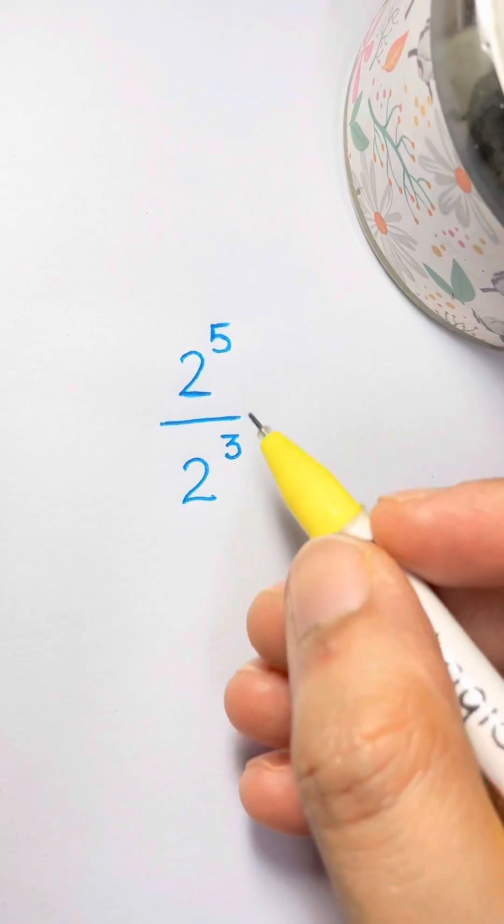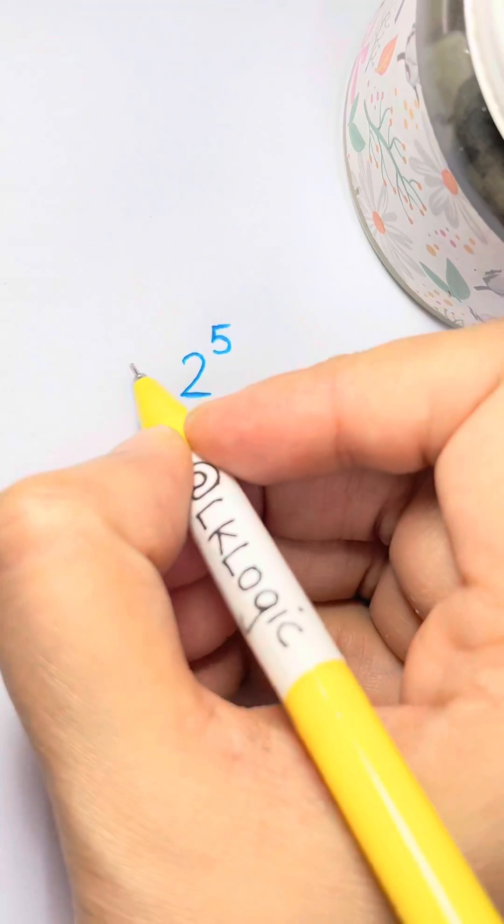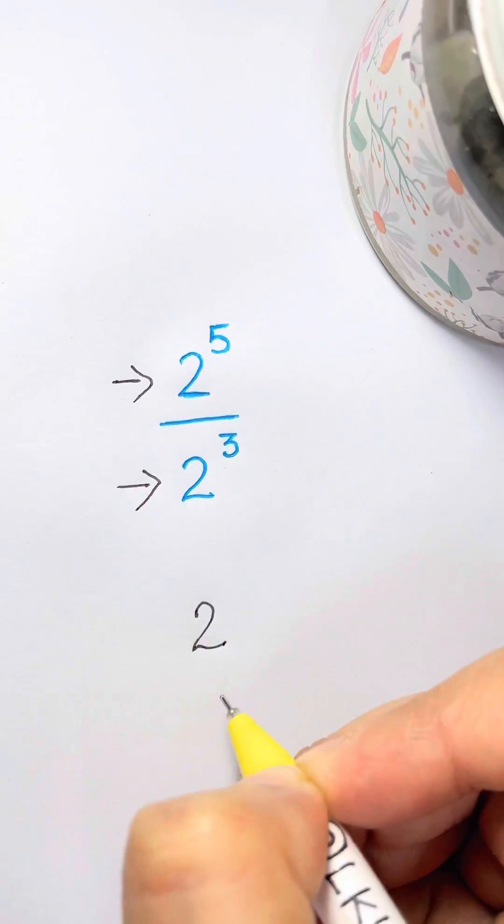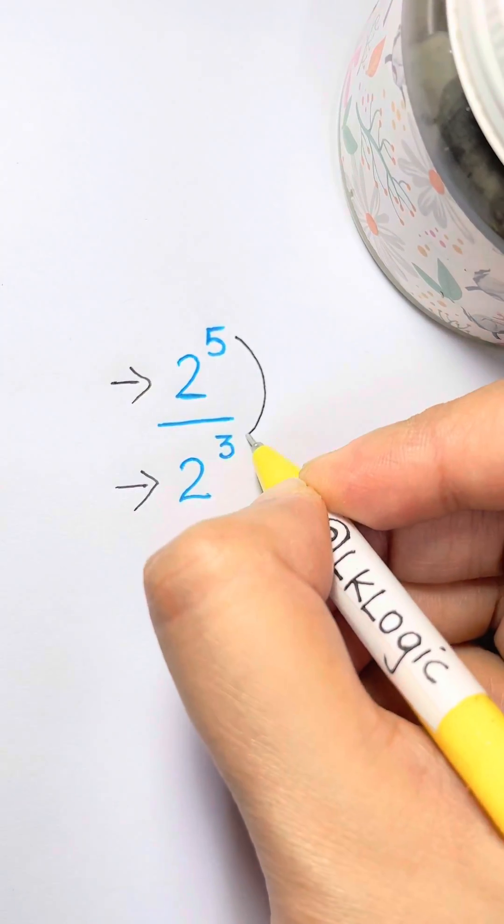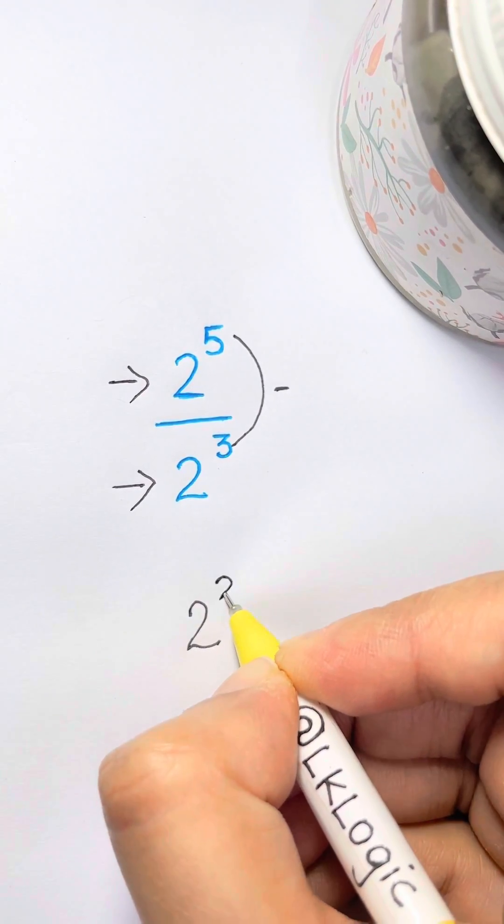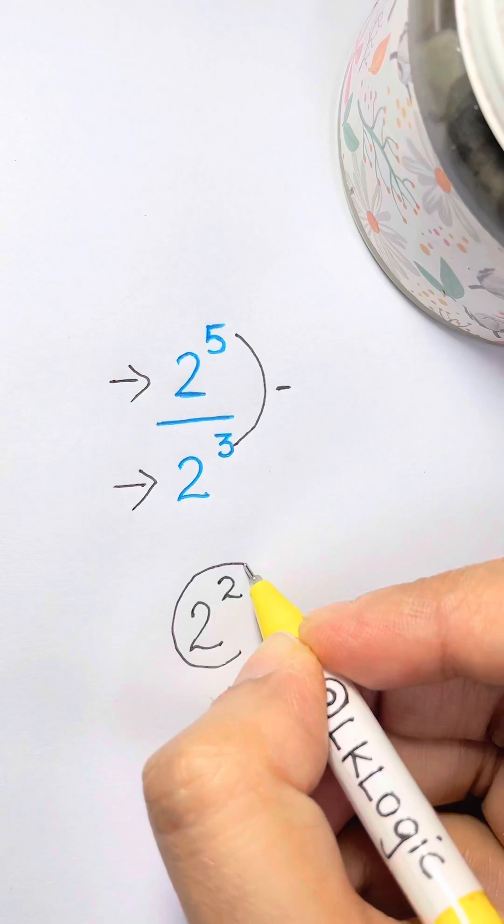Now what do you think happens when you divide powers? Well, if your bases are the same, again simply copy your base into the answer and then take your exponents and this time subtract them. So 5 minus 3 is 2 and 2 to the power of 2 is your answer.